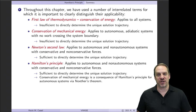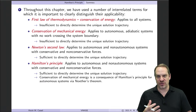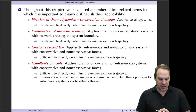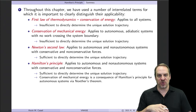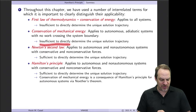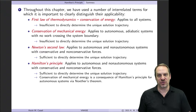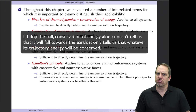The total energy of a system can include mechanical energy, thermal energy, internal energy, and other forms. For a system that conserves mechanical energy — autonomous and adiabatic, with no heat transfer or work crossing the system boundary — this is a special case of the first law of thermodynamics. But that too is insufficient to directly determine the unique solution trajectory. The conversion of potential energy to kinetic energy seems simple and gives the right answer, but only because we're already assuming the ball falls.